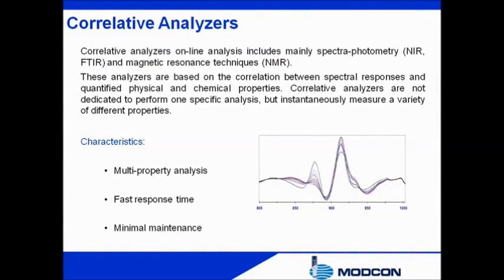Correlative analyzers are based on spectroscopy — which is NIR, Raman, or NMR — and overcome major drawbacks of discrete analyzers. Each correlative analyzer performs multiple property analysis. The absence of wearing mechanical parts reduces the cost of maintenance to the negligible, as compared to conventional discrete analyzers. Fast response time, in combination with almost instantaneous measurement of multiple process streams, presents an entire overview of the various quality parameters of different process streams. It provides an effective tool to the operator to adjust process conditions and to conduct the production process in its most economical mode.